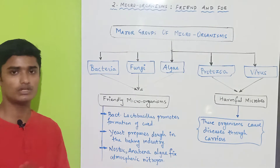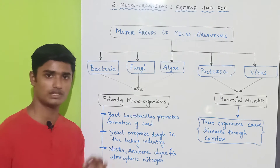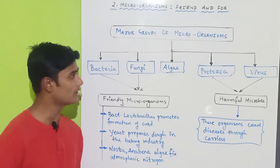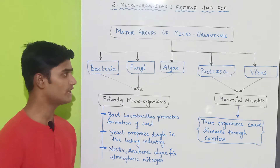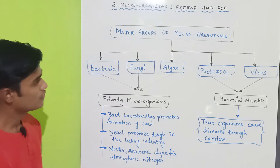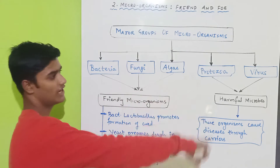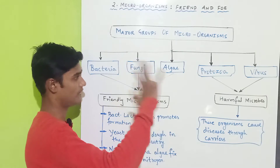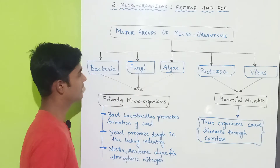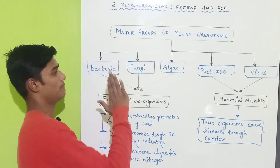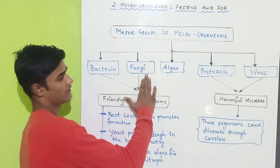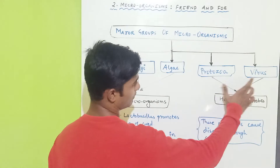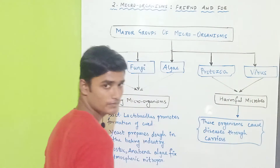So, these five categories of microorganisms — total five categories are there: bacteria, fungi, algae, protozoa, and viruses.